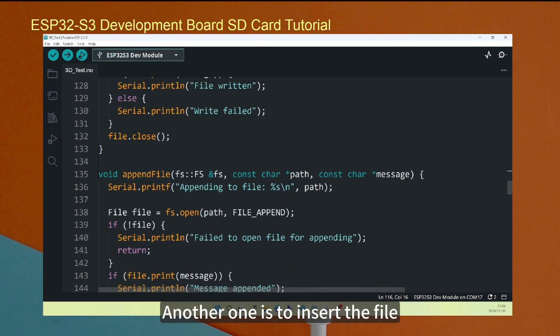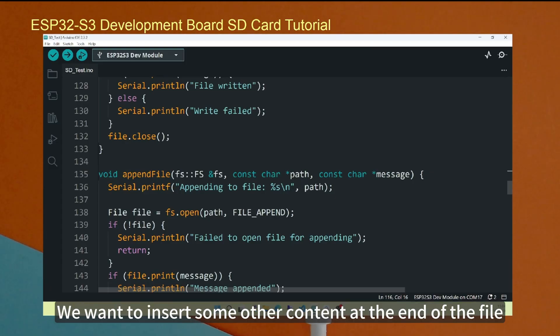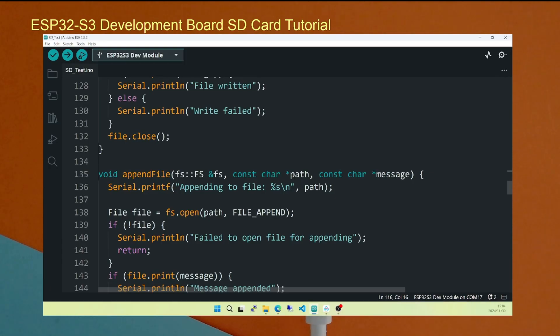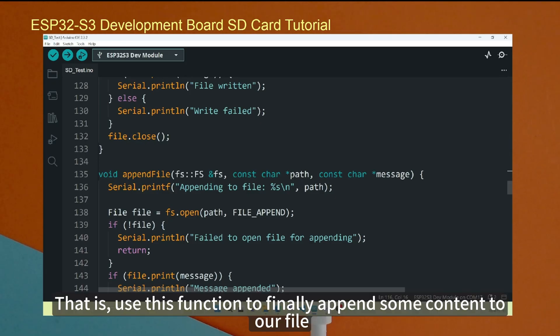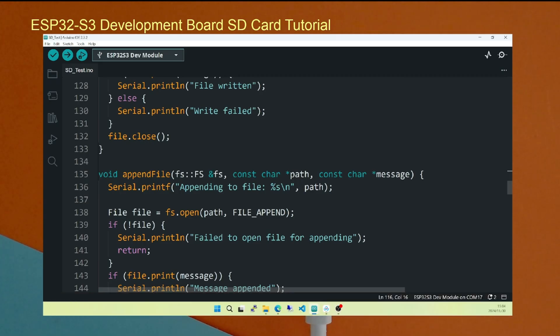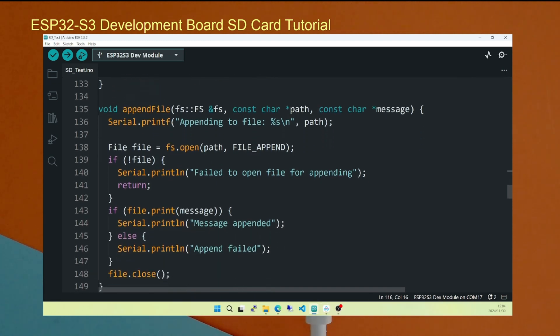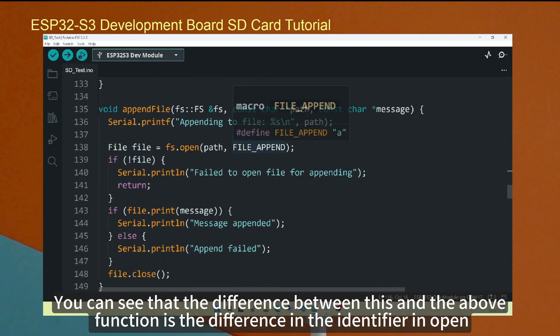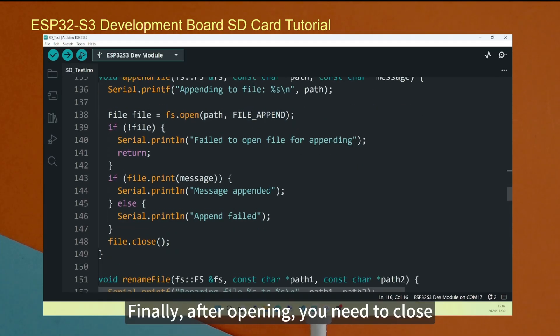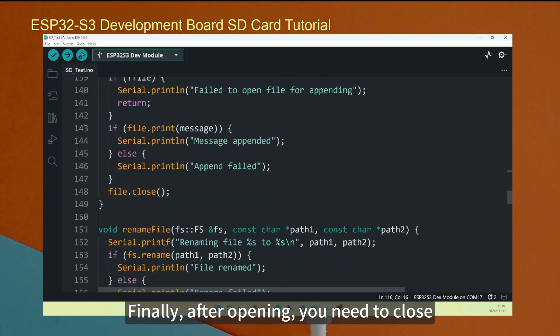Another one is to append the file. That is to say, we want to insert some other content at the end of the file. Use this function to finally append some content to our file. This is written after the existing content in our file. You can see that the difference between this and the above function is the difference in the identifier in open. Finally, after opening, you need to close.